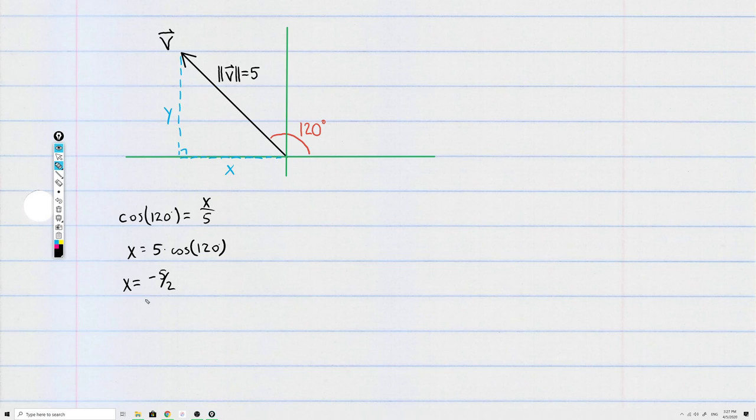That means x equals negative 5 over 2. It makes sense for x to be a negative number here because we've drawn this vector starting at the origin and then we're going to the left, meaning x should be a negative number.